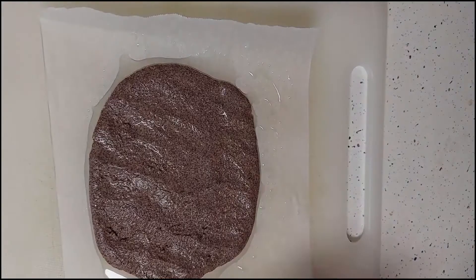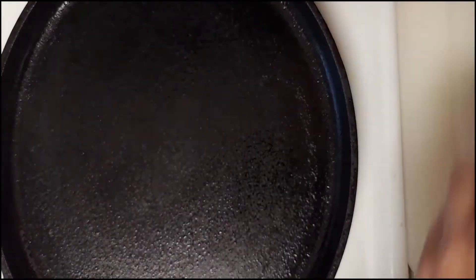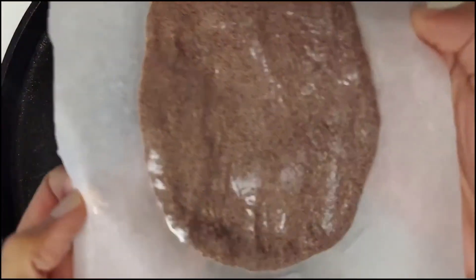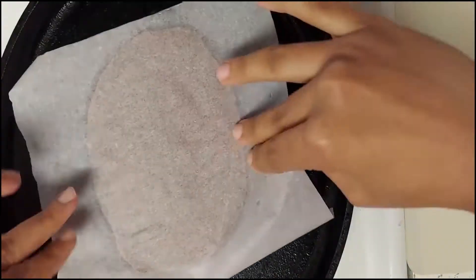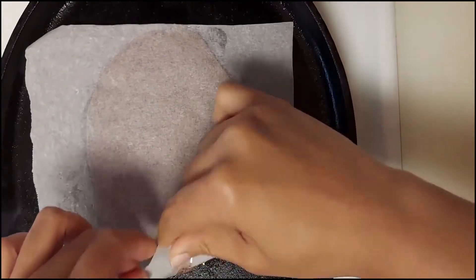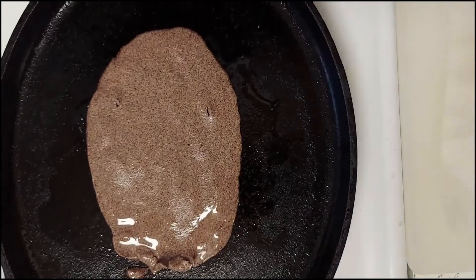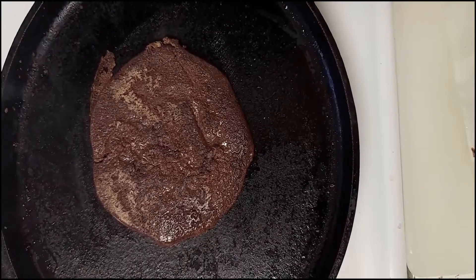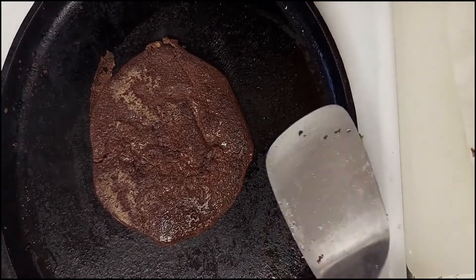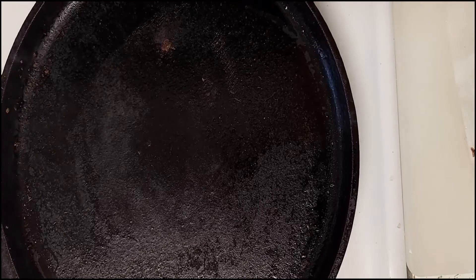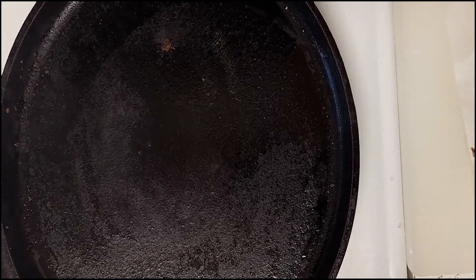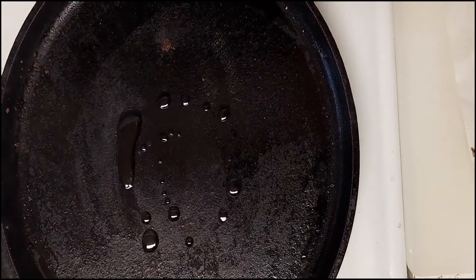Press it on the parchment paper. Once the dough is pressed, place this on the tawa. Flip this once it turns brown. There should not be any brown spots. You can also add a teaspoon of oil.